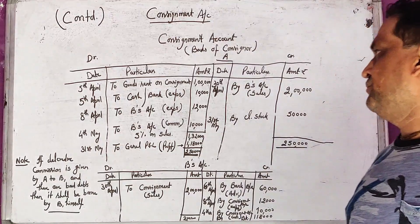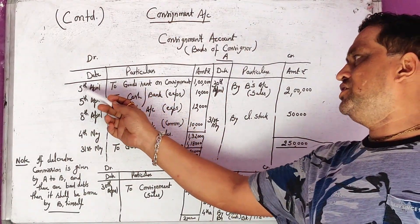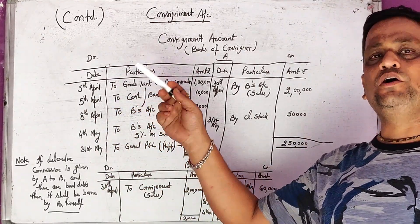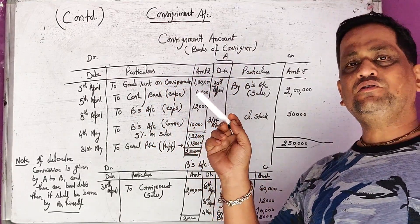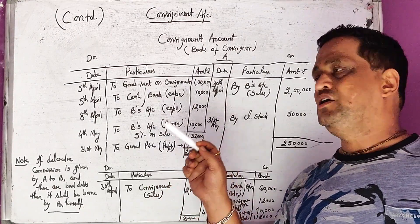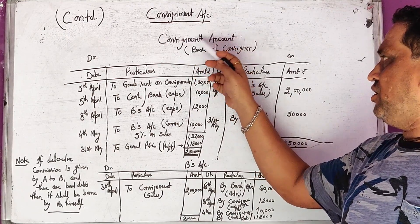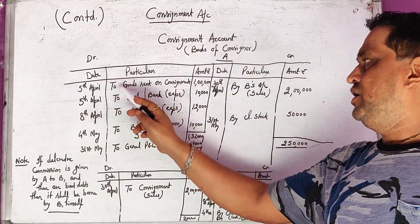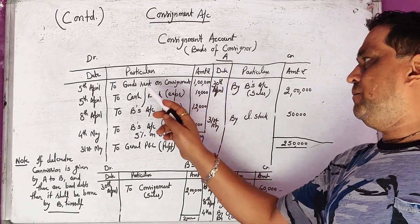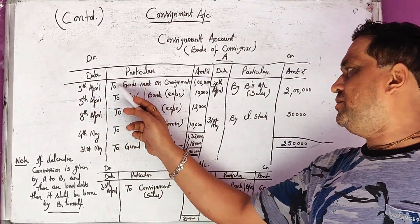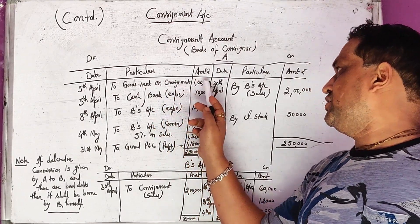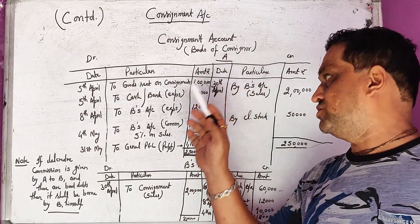The first transaction is assumed to be dated 5th April, when goods are sent to Mumbai by A to B. The journal entry was: consignment account debited to goods sent on consignment. Posting this in the ledger account, the first transaction will be 'to goods sent on consignment' with an amount of 1 lakh. Goods sent on consignment are always recorded at cost price.